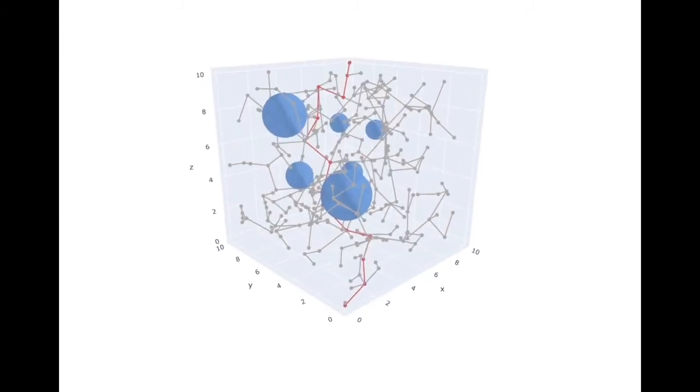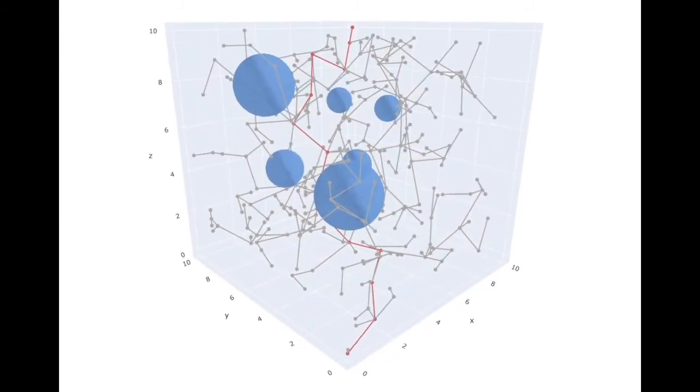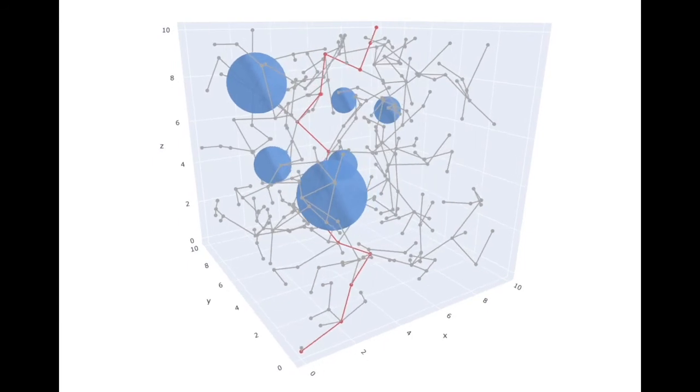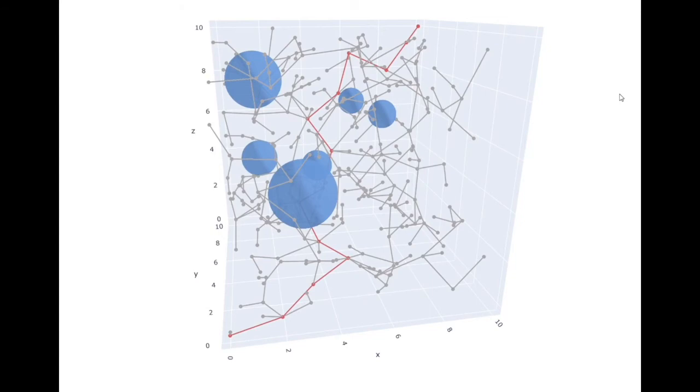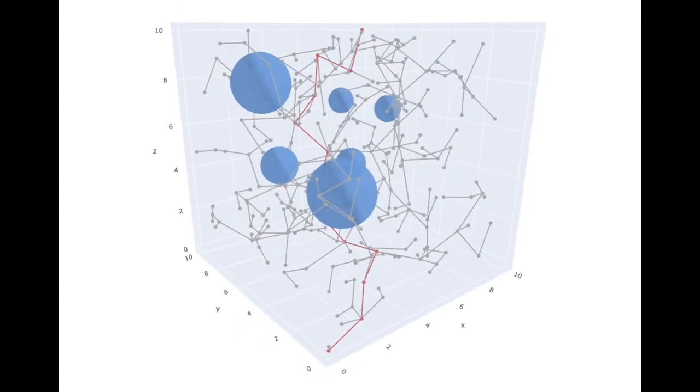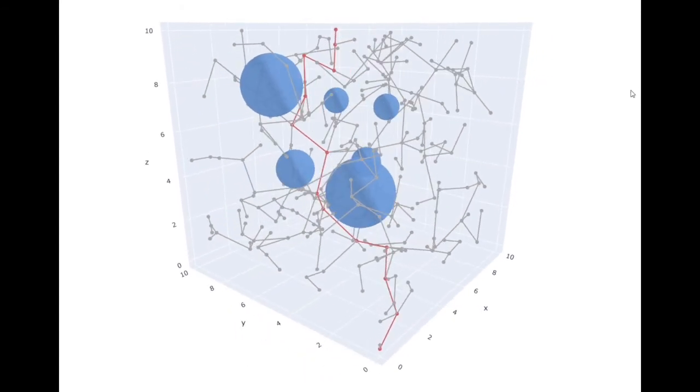Let's take a look at these algorithms in action starting with RRT. What you see here is a randomly generated environment of obstacles shown in blue. The gray lines illustrate the tree constructed by the RRT algorithm and the red portion is the trajectory RRT found from the starting point at the origin to the goal in the opposite corner.